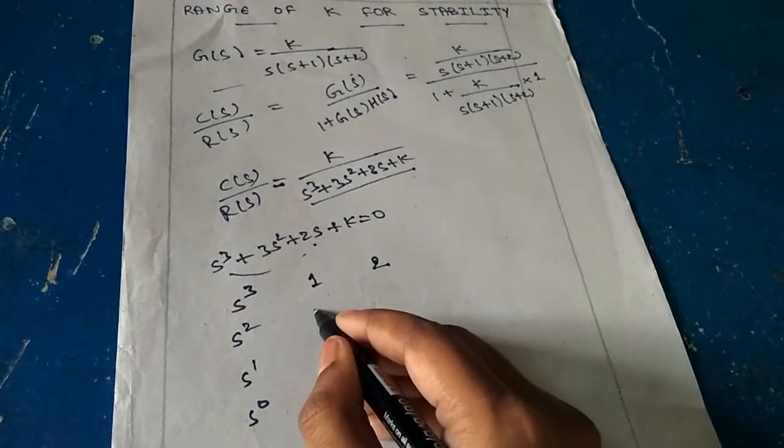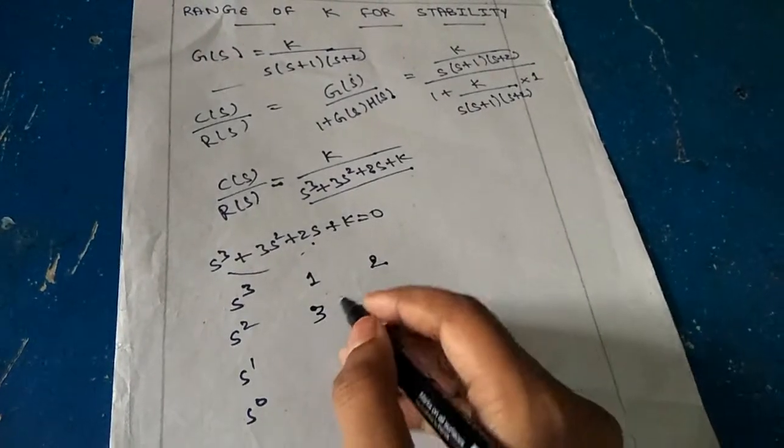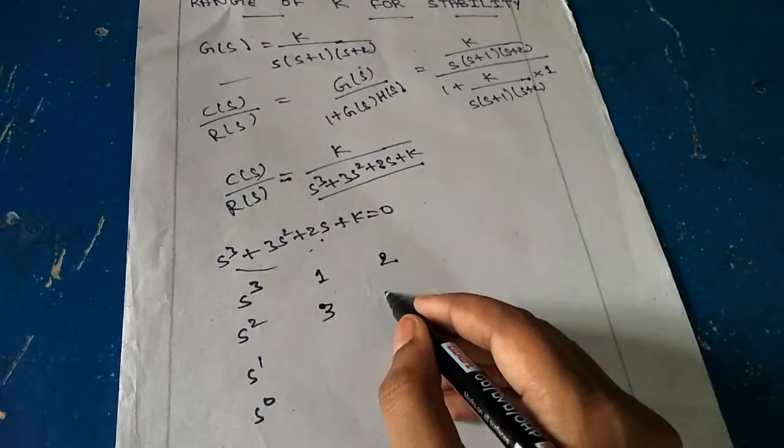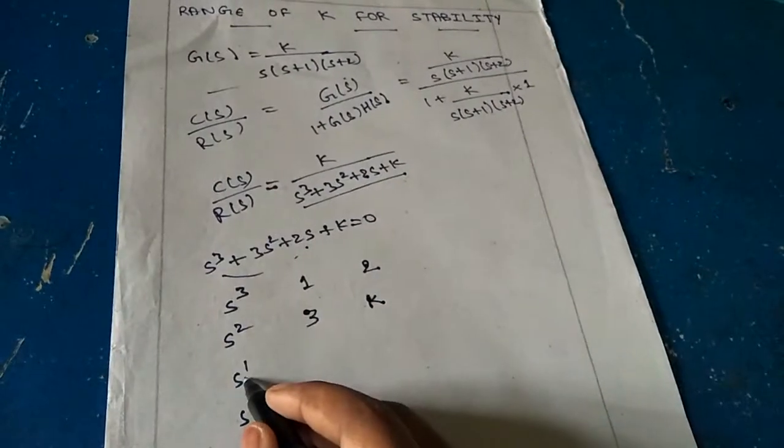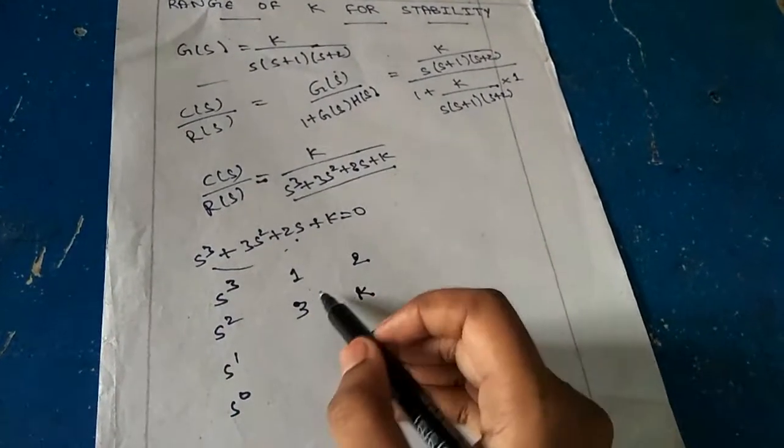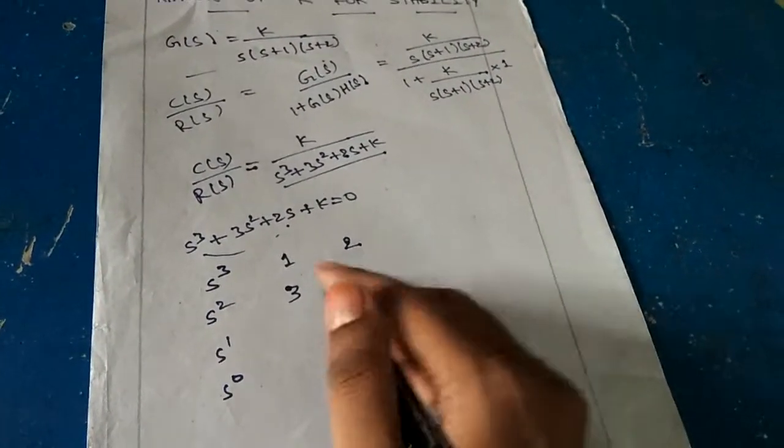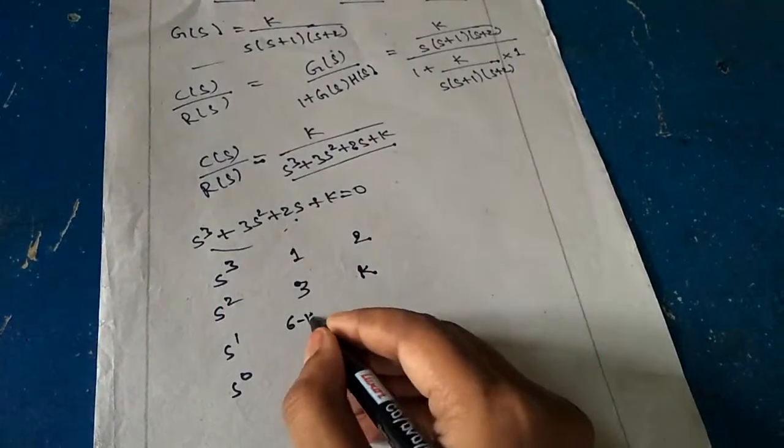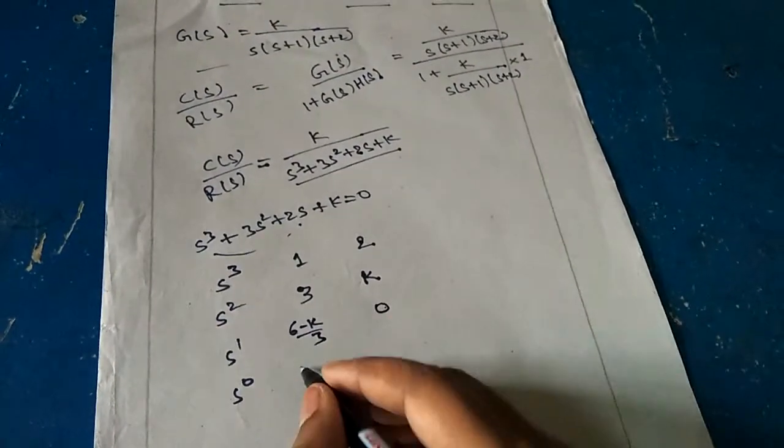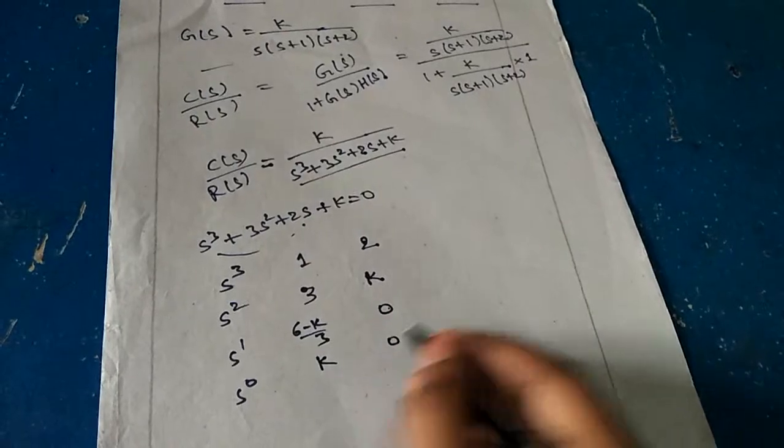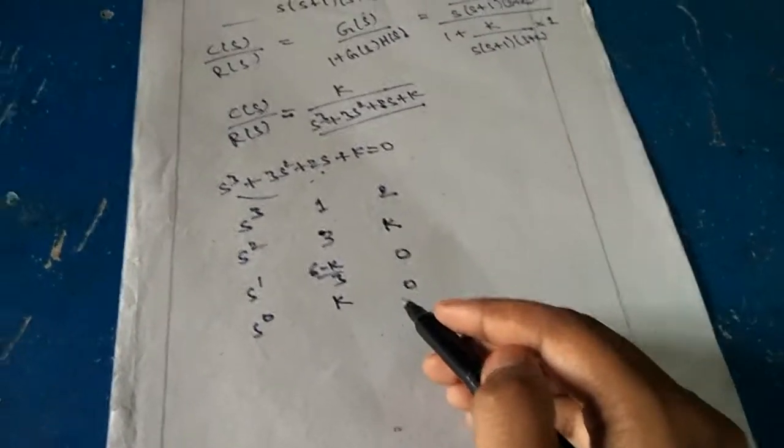Next is s²: coefficient is 3, alternate term is constant k. Now s¹: using the formula cb-ad/c, we get (6-k)/3. Then here 0. Here k, 0.